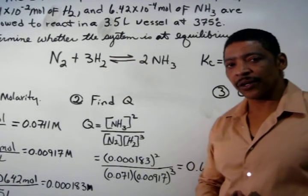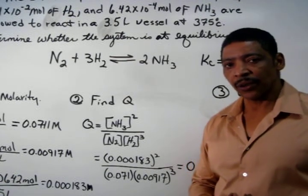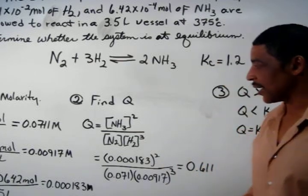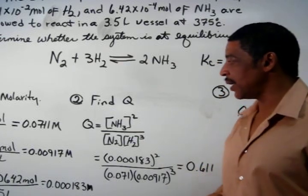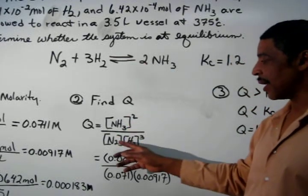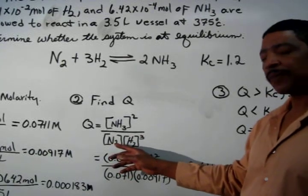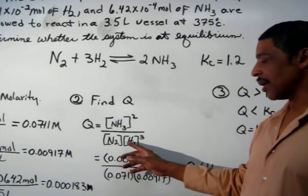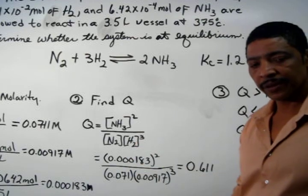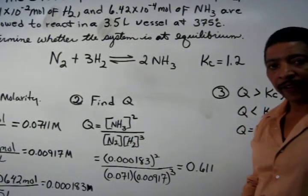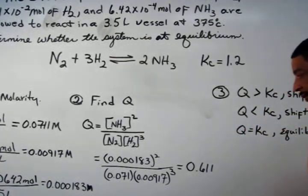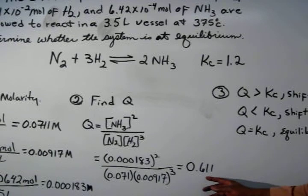Now insert these values into the Kc expression. For this reaction, the Kc expression will be the concentration of ammonia squared divided by the concentration of nitrogen times the concentration of hydrogen cubed. After performing this calculation, the final answer is 0.611.